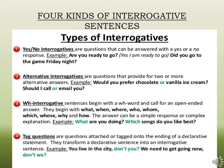The second type is alternative interrogatives, also called choice questions. These are questions that provide a choice, and the answer is already present within the question itself. For example, 'Would you prefer a chocolate or vanilla ice cream?' — the answer choices are already given in the question itself: chocolate or vanilla.